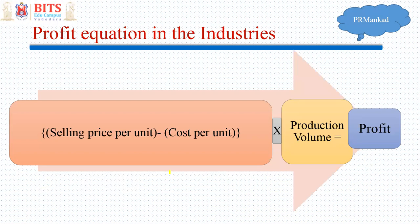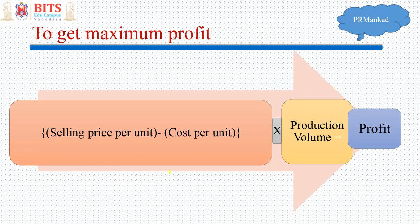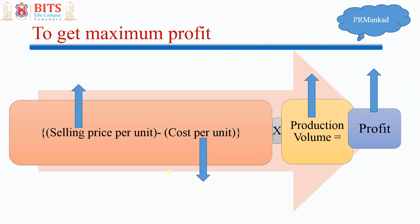That difference is multiplied by the number of products, that is the production volume, and that gives profit. To get maximum profit, common sense says you need to increase selling price — but in a competitive market, nobody is going to purchase your product if you increase the selling price. So you have to reduce cost per unit, produce the product at lesser cost, increase productivity, or produce more products in a given time — assuming there is market demand — and that results in profit.